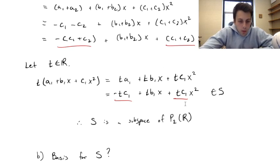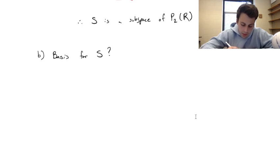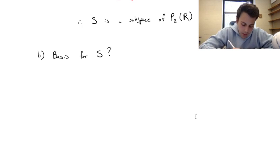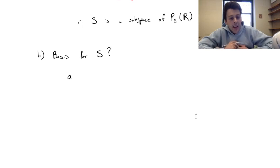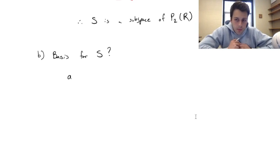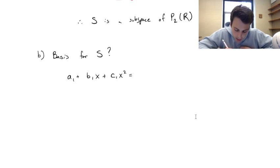Now, what if we wanted to find a basis for this subspace? We take the generalized form of something in the subspace: a1 plus b1·x plus c1·x². We substitute in the condition that a1 equals minus c1, giving minus c1 plus b1·x plus c1·x².